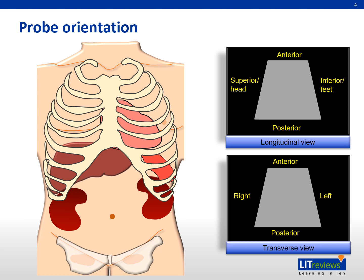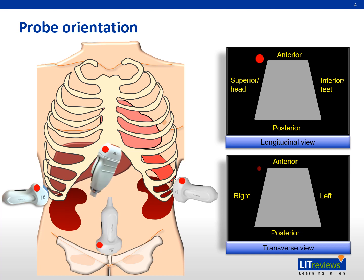For proper orientation, the probe marker indicated by the red dot is directed to the patient's head for a longitudinal view and the patient's right side for a transverse view. Probe markers' shape and colour vary in different ultrasound machines. Regardless of the view, the marker should always be oriented to coincide with the left side of the ultrasound image.